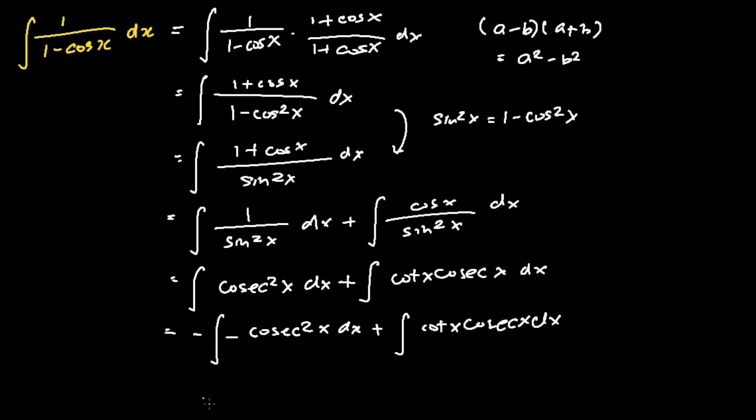And last but not least, we can evaluate the integral. The integral of negative cosecant square x dx is just basically cotangent x. Whereas the integral of cotangent x cosecant x dx is negative cosecant x.